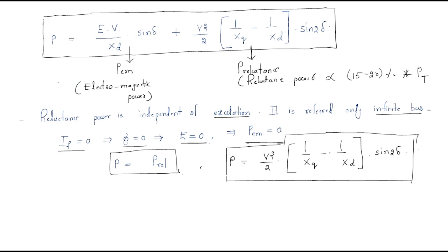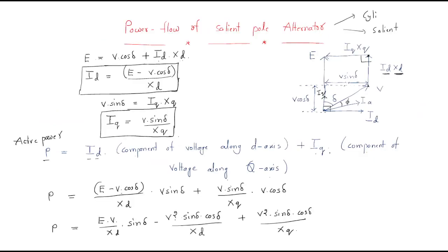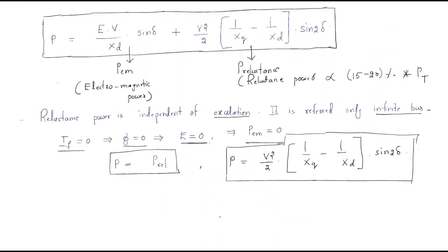So this is about the power flow of salient pole alternator. In conclusion, the power flow is of two types: one is electromagnetic power and another one is reluctance power. When excitation is zero, the alternator still has reluctance power. I hope all of you understood the session. Thank you.